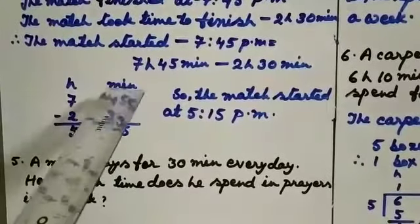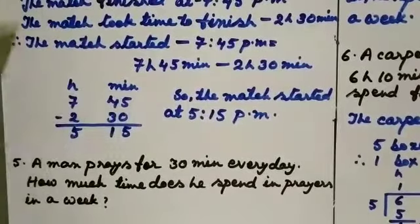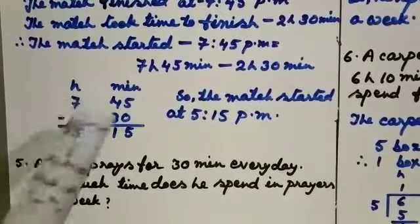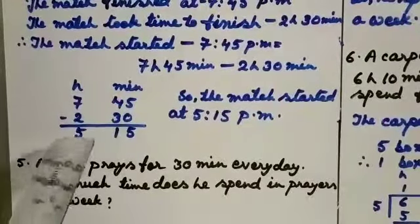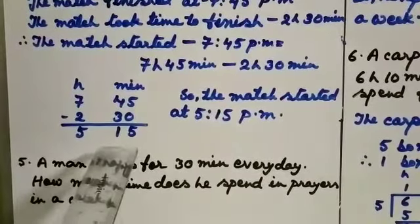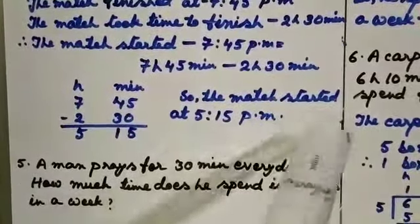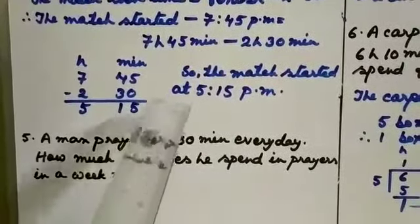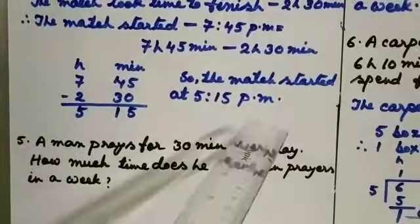That is hours and minutes. After that, 7:45 and 2:30 if you subtract, you see this is simple subtraction. You are getting 5 hours 15 minutes. So the match started at 5:15 pm. 5 hours 15 minutes means 5:15 pm. Clear?